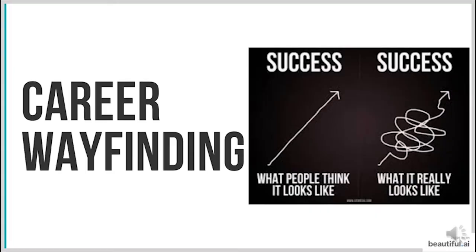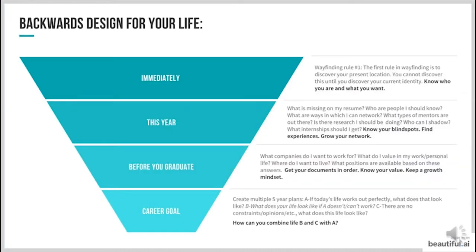Today we're going to talk about how to find out what you really want to be when you grow up, knowing that this is an ever-changing, elusive ideal — and I am still trying to figure out what I want to be when I grow up. This graphic pretty much explains it all. We have this idea of what success looks like, but really it is a series of one-way streets, dead ends, winding roads, road construction, and beautiful scenery, combined with learning, growing, and developing into a holistic person. I'm going to go through the backwards design theory.